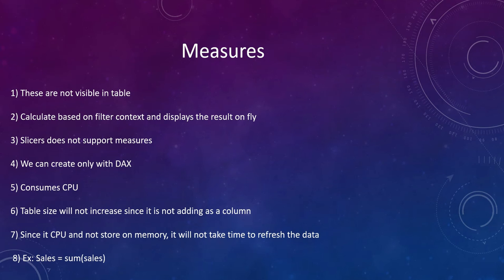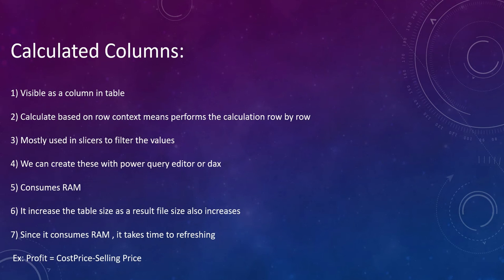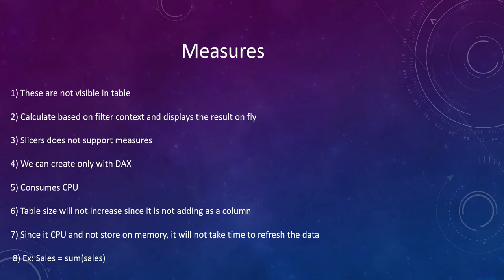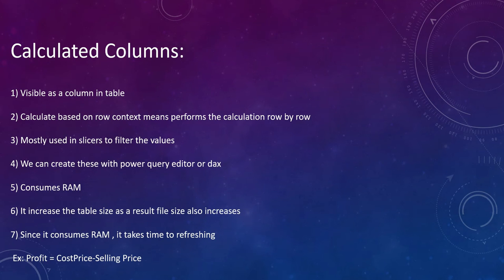The second difference is context: calculated columns use row context, meaning the calculation is performed row by row. Measures use filter context and the calculation is performed on the fly — they calculate dynamically based on the current filter context.